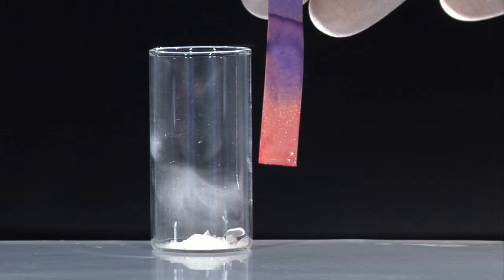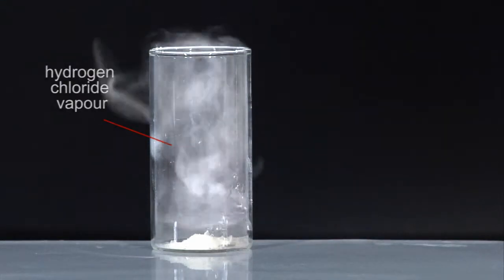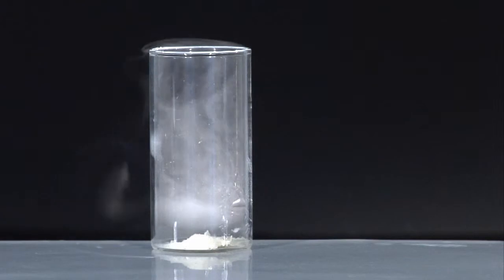Pure hydrogen chloride vapour is colourless. The misty appearance of the hydrogen chloride is due to water condensing in the region of the hydrogen chloride vapour.